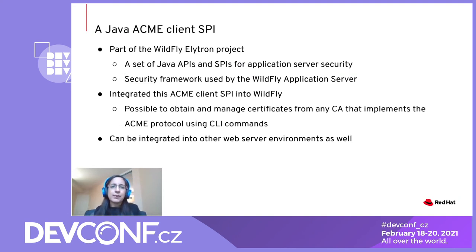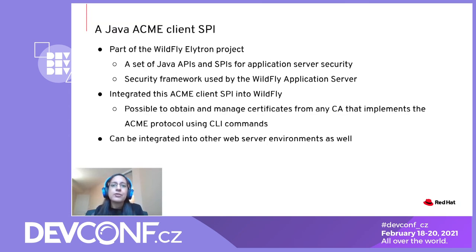When the ACME protocol was created, we developed a Java ACME client SPI that's part of the WildFly Elytron project. WildFly Elytron is a set of Java APIs and SPIs for application server security and is the security framework used by the WildFly application server. We integrated our Java ACME client SPI directly into WildFly, making it possible to obtain and manage certificates from any ACME-compliant Certificate Authority using simple CLI commands.